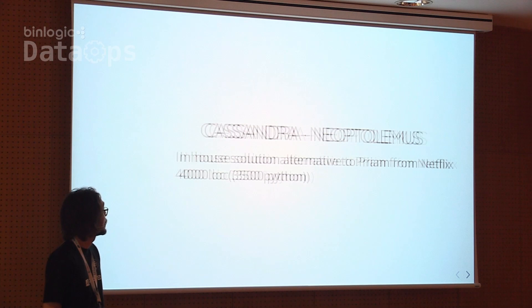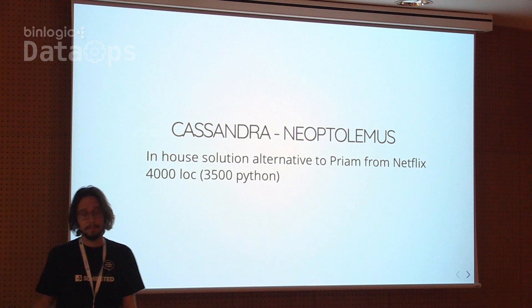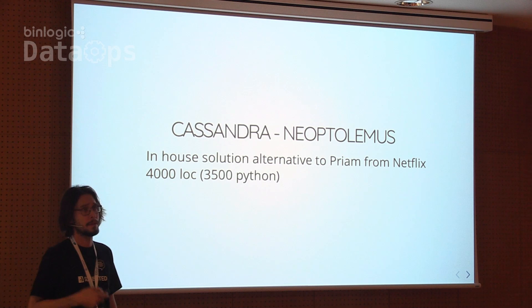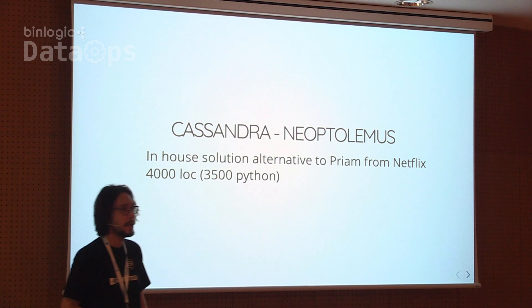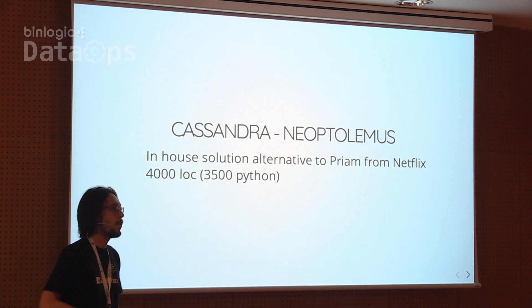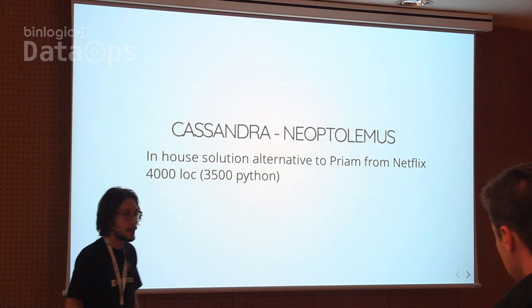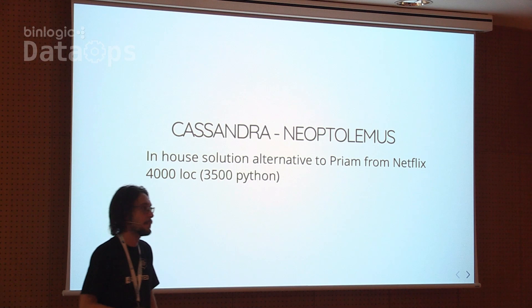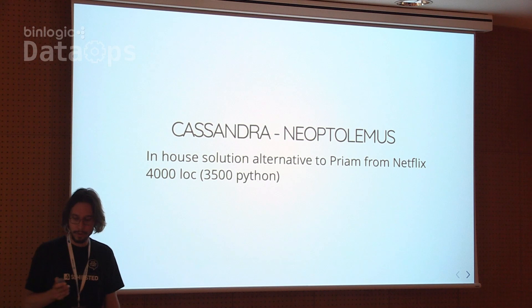For Cassandra, we started using a preamp from Netflix but had lots of trouble with it — it wasn't keeping up to date with the versions of Cassandra we needed, and we weren't comfortable with the complex codebase. So we developed an in-house solution called Neuptolemus — about 5,000 lines of Python code and 500 lines of Bash scripting — and I'll show you a little bit of code from it.